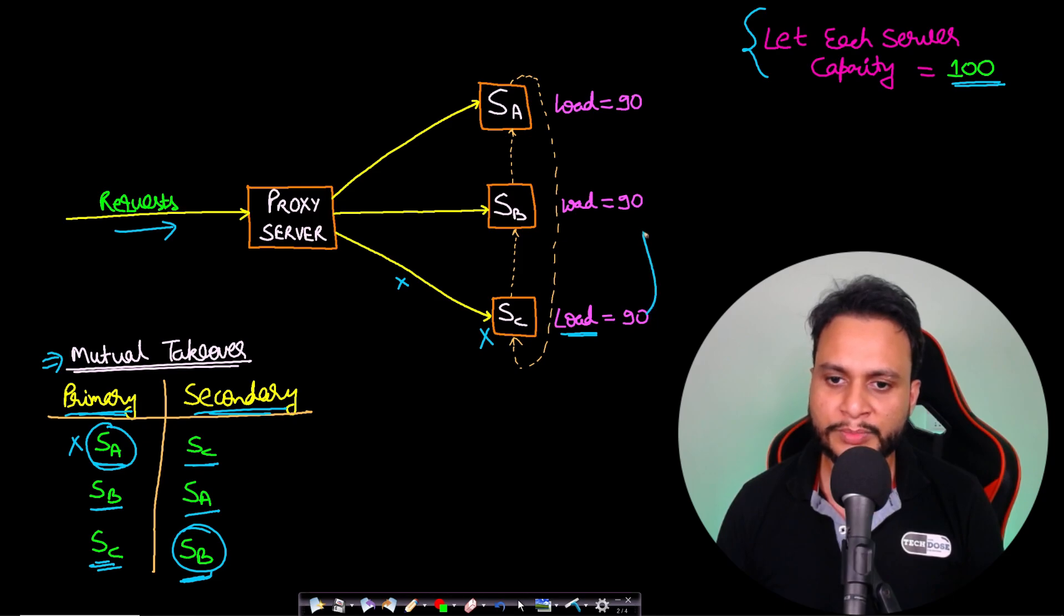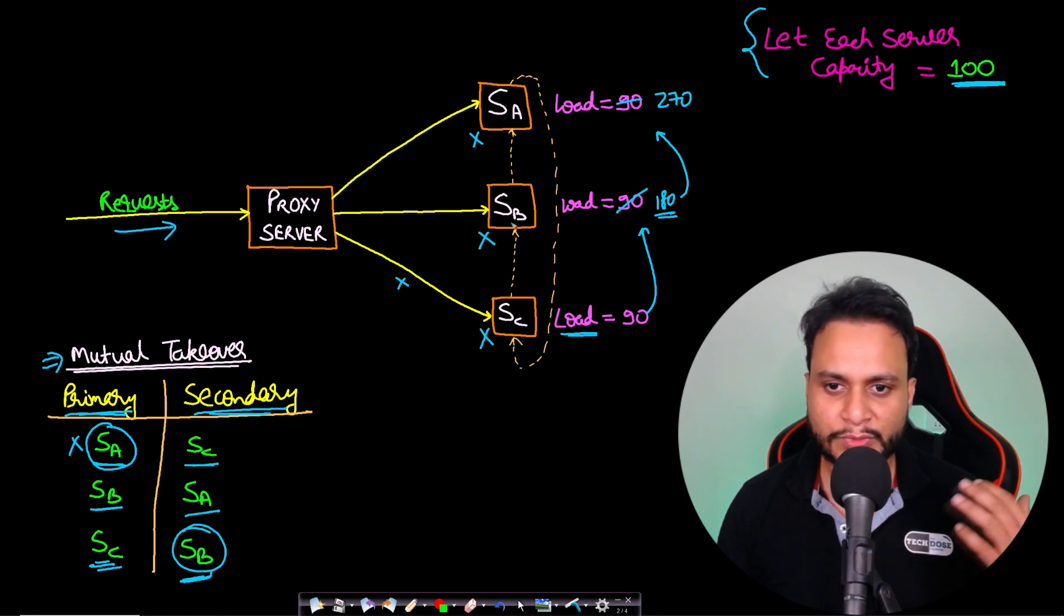So the load if it was 90 at SC, then this load will be transferred to SB and the load equivalent will be 180. But we had already assumed that the maximum server capacity is 100. Now if we are exceeding 100, then possibly SB will also crash. And if SB has crashed, then all these loads will be transferred to SA which is 180, and this will become 270, and therefore SA might also crash. Therefore you see that by crashing only one server we are crashing all the servers which were in this entire setup. So this is kind of a domino effect where just a single event is triggering the downfall for every server. This is nothing but cascading failure.